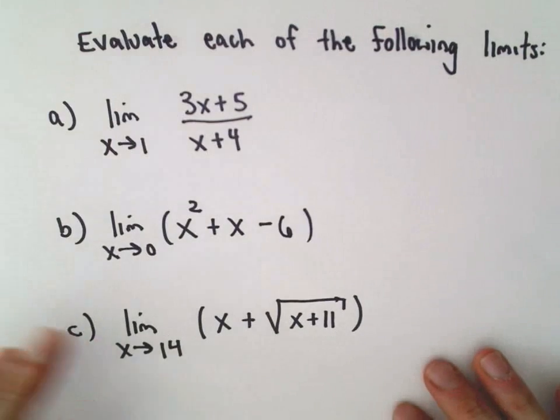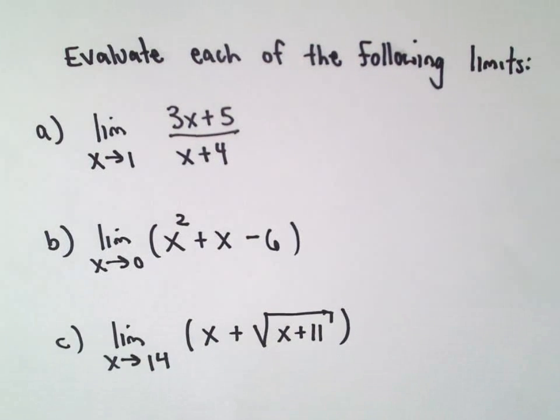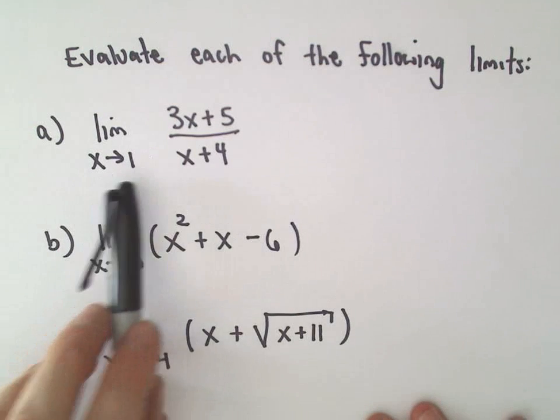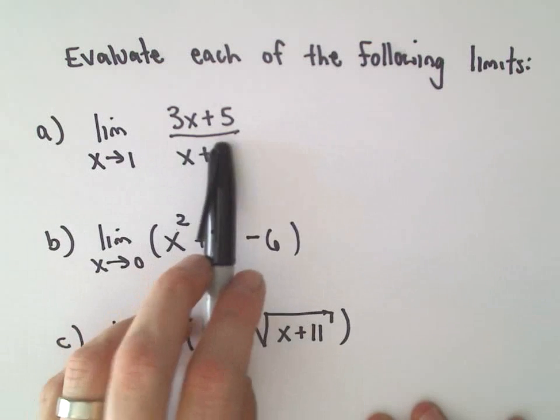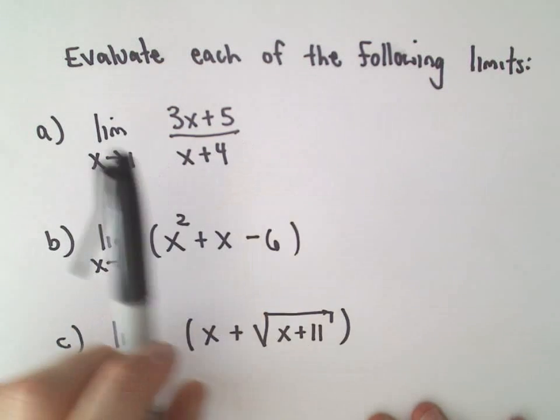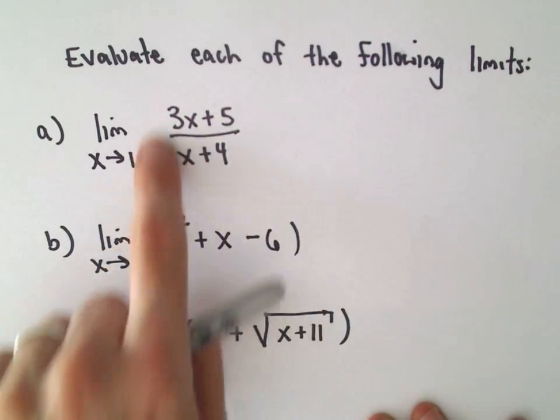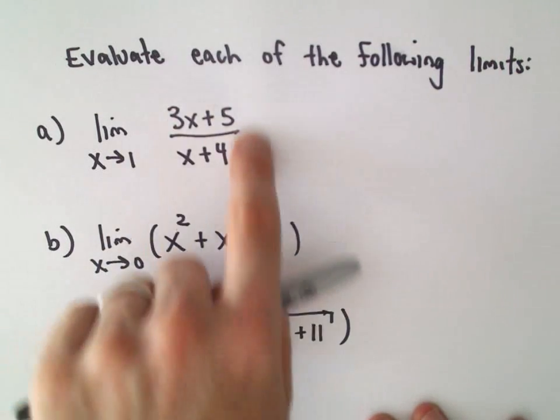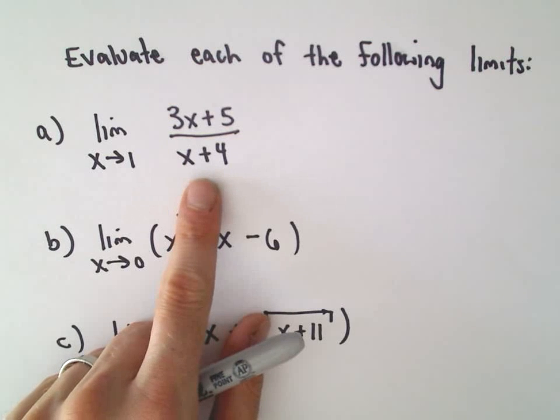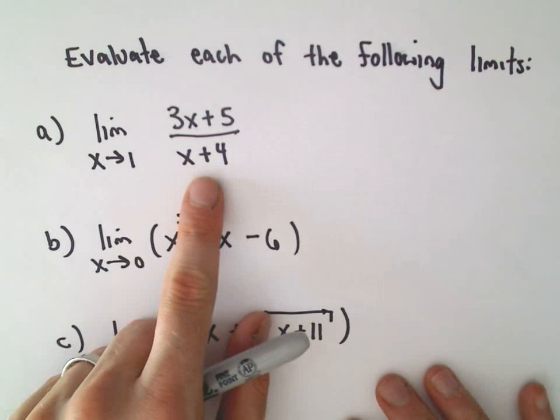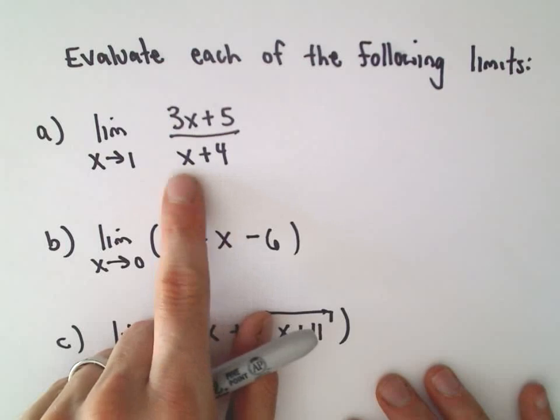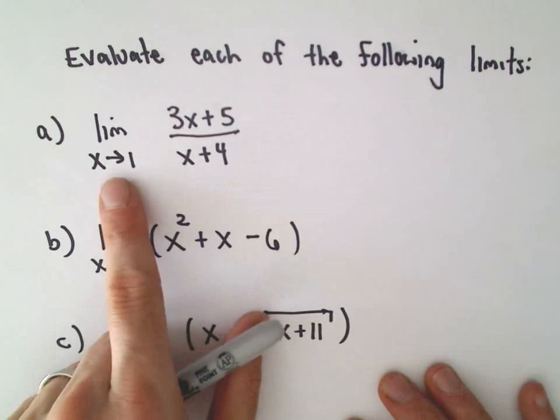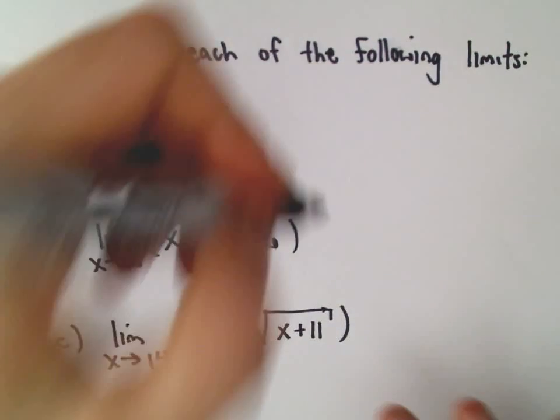So I think we can go through these pretty quickly. If you look at the limit as x approaches 1 of 3x plus 5 over x plus 4, if you think about the function 3x plus 5 over x plus 4, this is a rational function. The only place where they're not continuous is where they're undefined. This is going to be undefined at negative 4, but that's not where we're doing the limit.